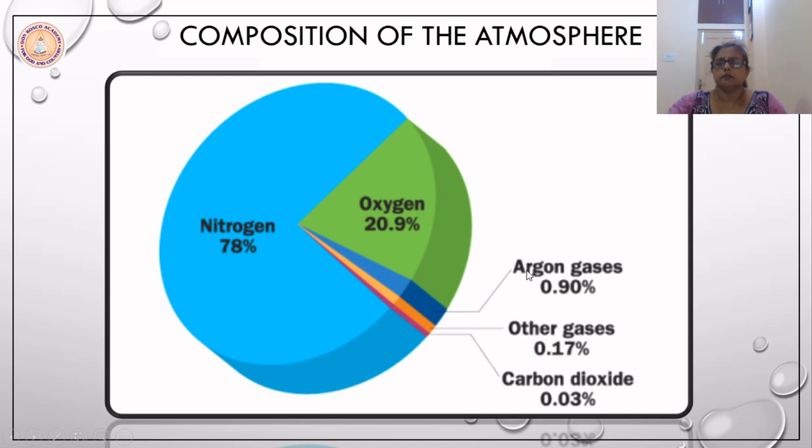Argon, which is an inert gas, has a composition of only 0.90%. While other gases include 0.17%, carbon dioxide very minuscule at 0.03%.